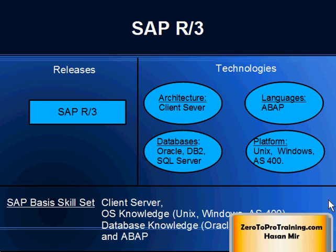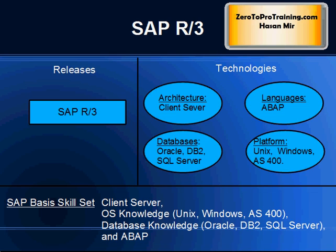SAP R3 was a client-server based system. It could be based on one of these databases: Oracle, DB2, or Microsoft SQL Server. R3 could be implemented on various operating systems, namely Unix, Windows, and AS/400. The basis administration role required the skill set of managing software in a client-server environment. The basis person must also possess the skill set to handle the above-mentioned databases and operating systems.